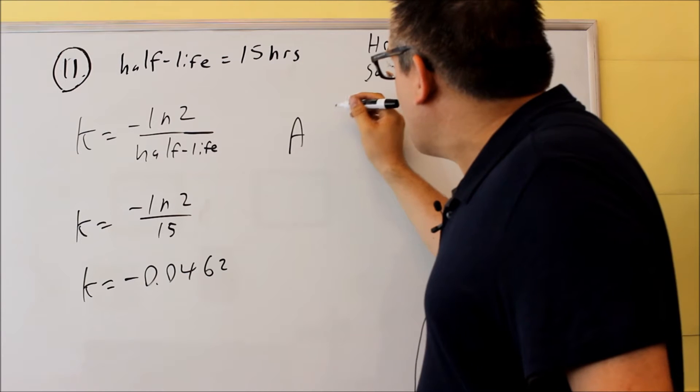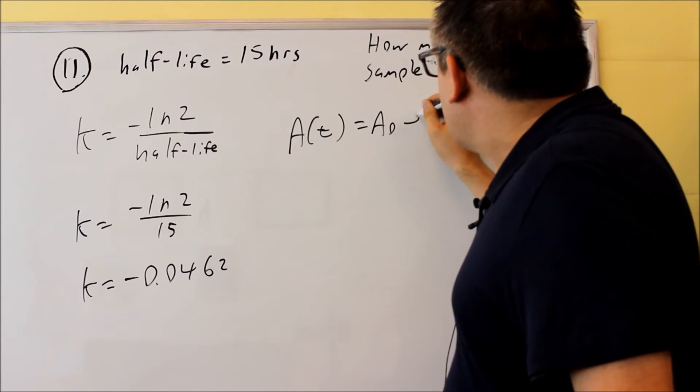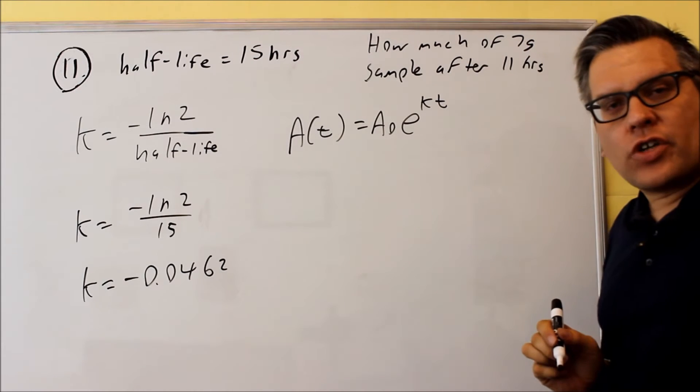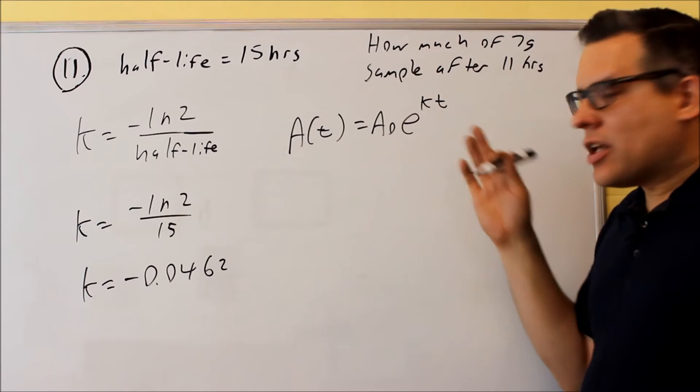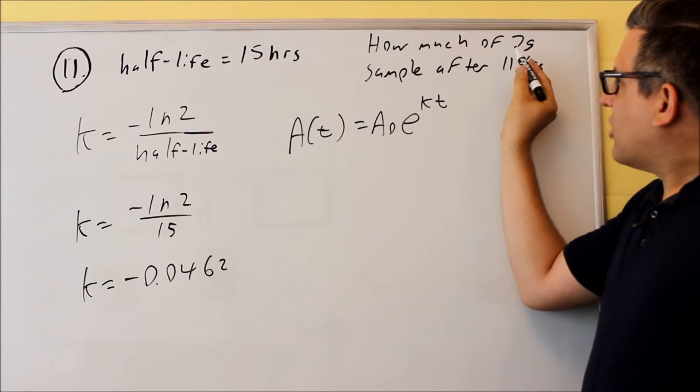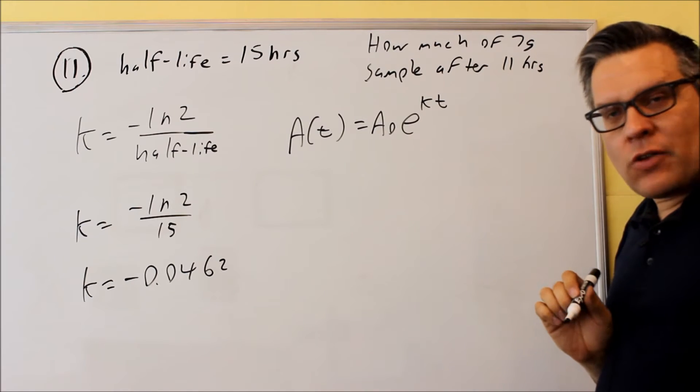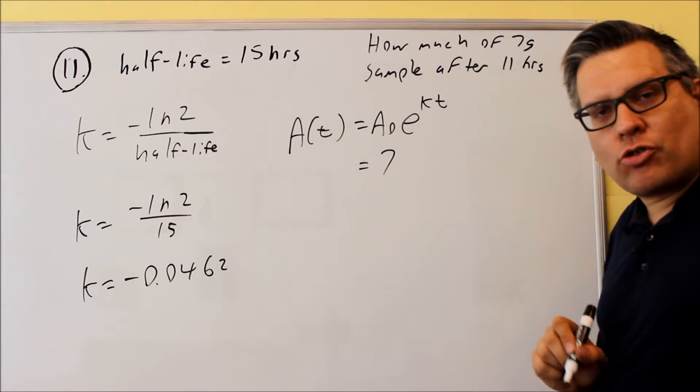Now we want to use the growth formula. The growth formula is this one that was presented in the notes. A stands for amount, and A₀ is the initial amount we're starting with. Since it asks how much of a 7-gram sample remains after 11 hours, there's going to be a 7 in there because that's how much you're originally starting with.